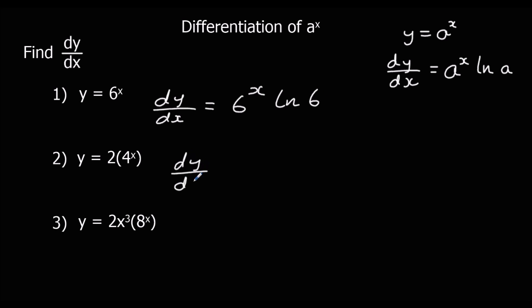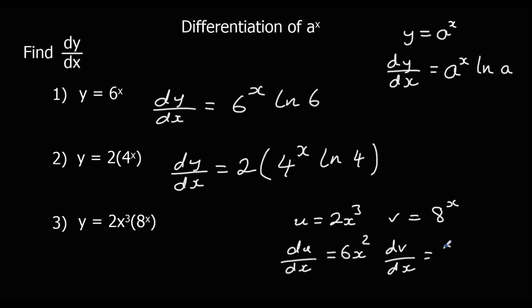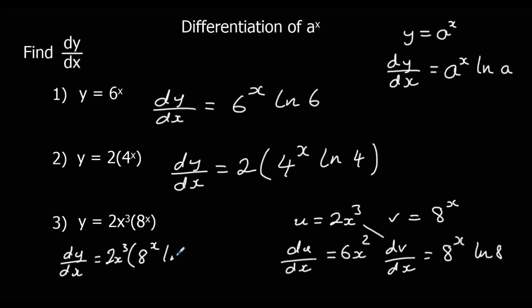For question 2 we've got 2 times 4 to the power of x, so dy/dx is 2 times 4 to the power of x ln 4. Question 3 is the product rule: u is 2x cubed and v is 8 to the power of x, so du/dx is 6x squared and dv/dx is 8^x ln 8. So dy/dx is u dv/dx, which is 2x³ times 8^x ln 8, plus v du/dx, which is 6x² times 8 to the power of x.